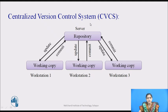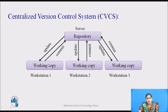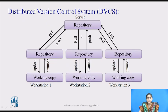This diagram represents a centralized version control system, where there is a central server which has the remote repository, and these are the workstations which are accessing the repository. Every workstation has to be connected to this server. The drawback of a centralized version control system is a single point of failure — if the server fails for an hour, then no one can collaborate at all during that time.